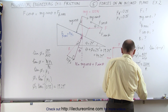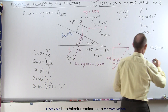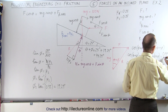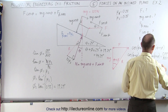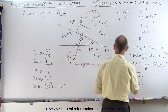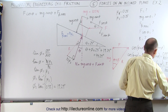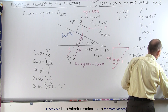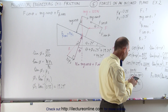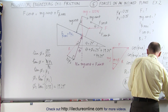The tangent of theta plus phi by definition equals the opposite side divided by the adjacent side. In other words, the tangent of 44.29 degrees equals F divided by mg, which is 100 newtons. This means the applied force F equals 100 newtons times the tangent of 44.29 degrees. Taking the tangent and multiplying by 100, we get the applied force equal to 97.55 newtons.